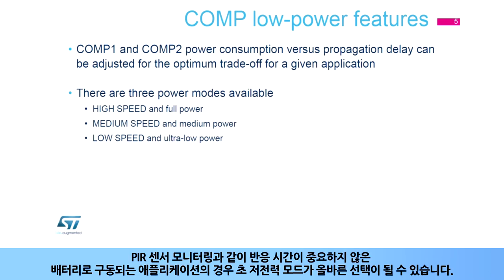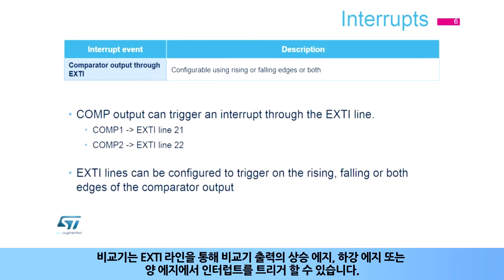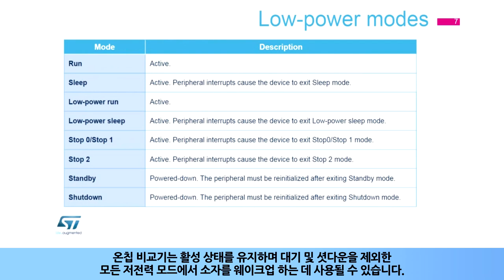Ultra-low power mode would be the right choice for battery-powered applications where reaction times are not critical, for example in PIR sensor monitoring. The comparator can stay active even if the rest of the system is suspended and the clock is switched off. It can trigger an interrupt on the rising, falling, or both edges of the comparator output through the EXTI line, and can be used to wake up the device from all low power modes except standby and shutdown.